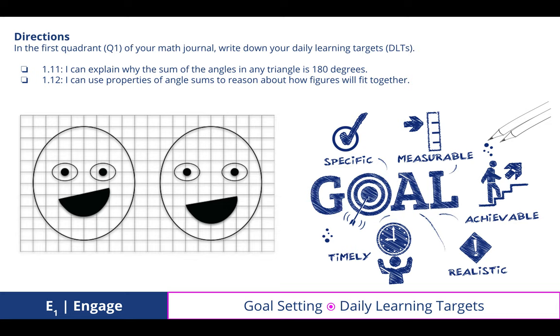I can explain why the sum of the angles in a triangle is 180 degrees, which is really a review from what we did last time, and how we're going to apply that to today's lesson. And I can use properties of angle sums to reason about how figures will fit together.